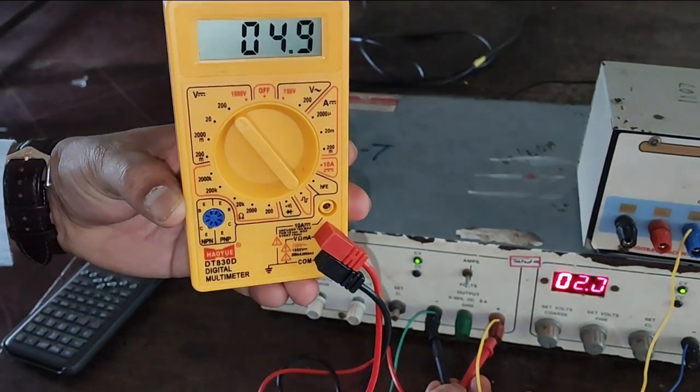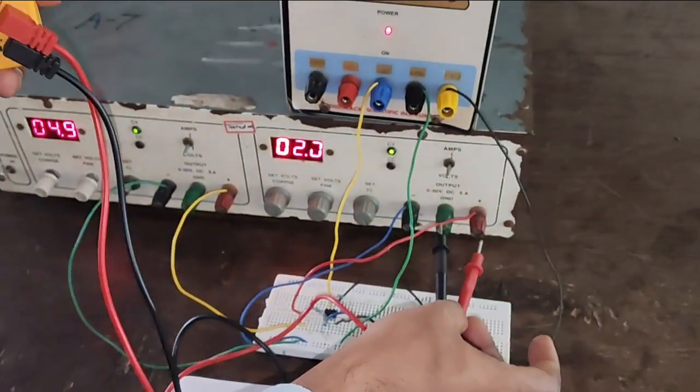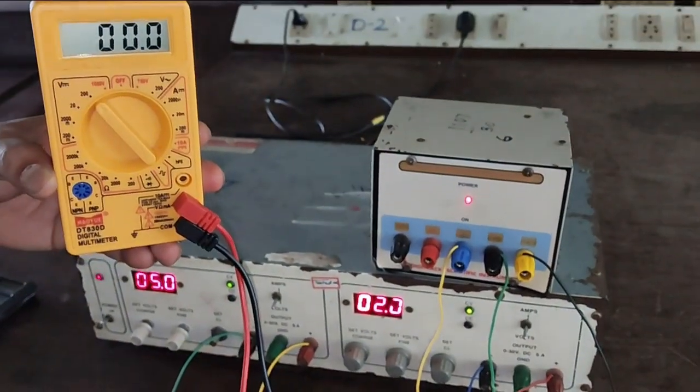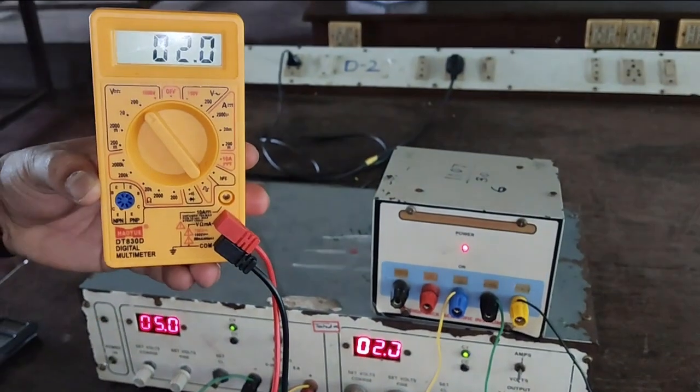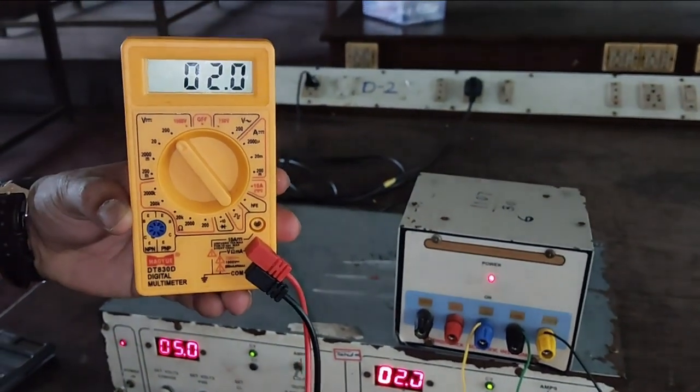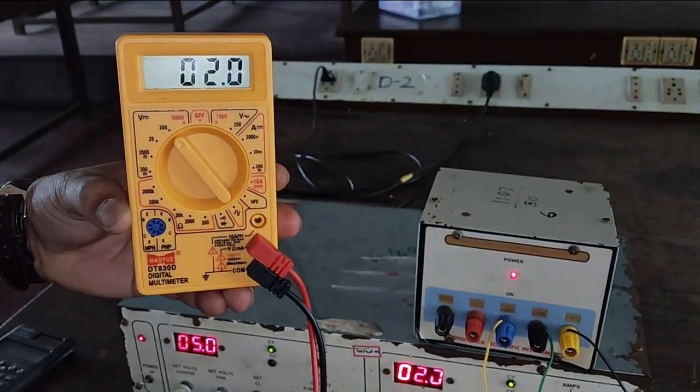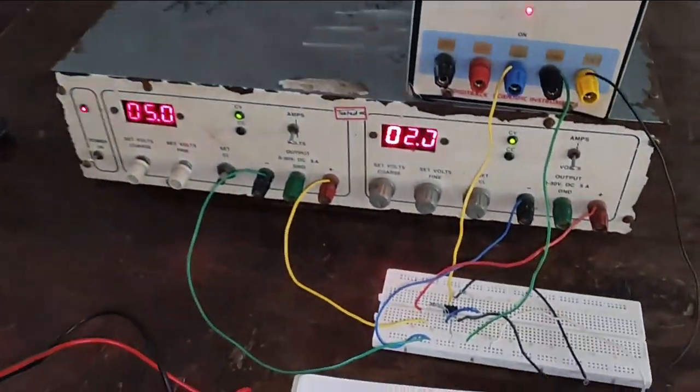Now check the voltage of V1. Here it is showing 2 volts. That means 5 minus 2, we must get 3 volts at the output.